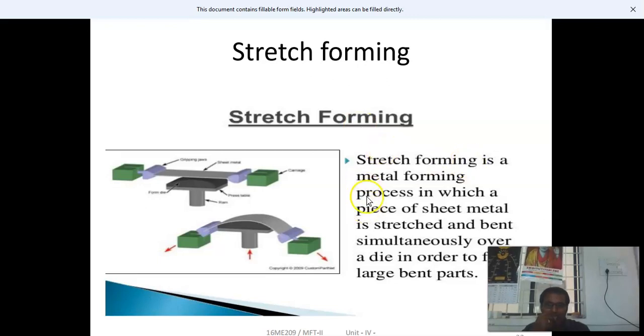Stretch forming is a metal forming process in which a piece of sheet metal is stretched and bent simultaneously over a die to form large bent parts. The sheet metal is fitted into dies or carriers, then stretched or pulled in opposite directions while being bent over the die. This is the basic operation of stretch forming.